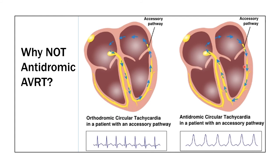In antidromic AVRT, because the antegrade limb travels through the accessory pathway rather than the normal conduction system, you get a wide QRS complex tachycardia — not a narrow one. The EKG given shows a narrow QRS complex tachycardia, so it is not antidromic atrioventricular reentrant tachycardia. Antidromic AVRT must traverse the accessory pathway from atrium to ventricle and is therefore always a wide QRS complex tachycardia.